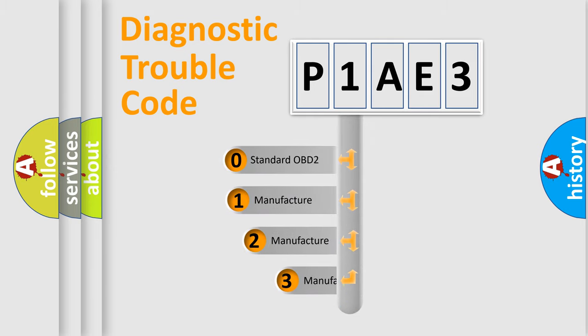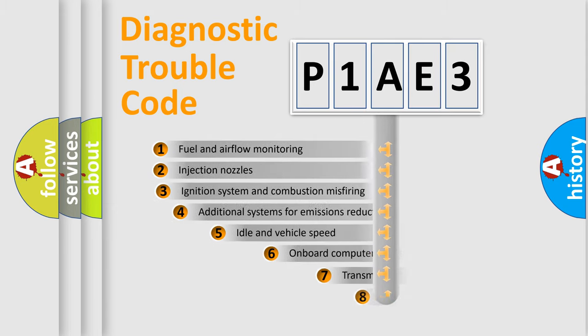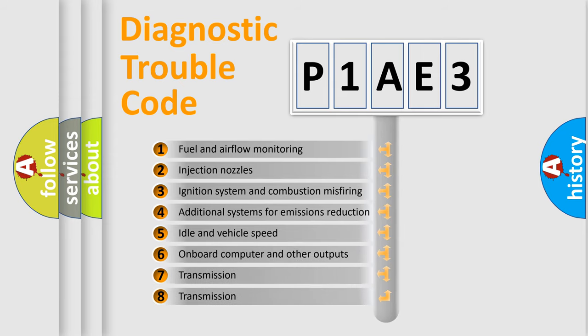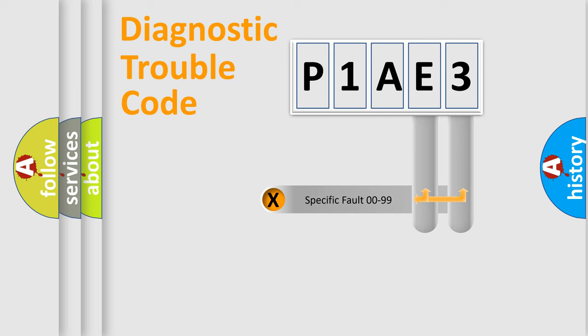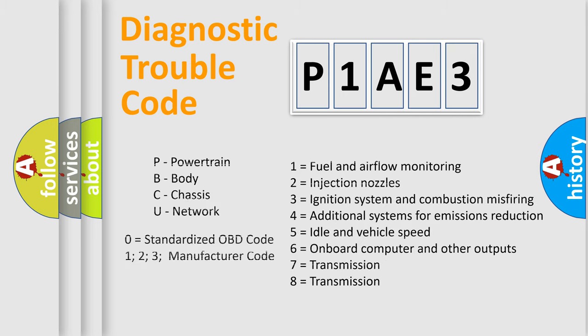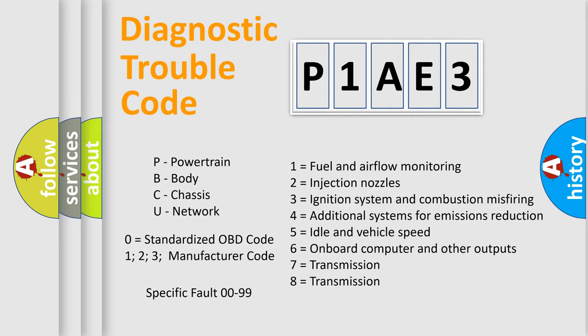If the second character is expressed as zero, it is a standardized error. In the case of numbers 1, 2, or 3, it is a more precise expression of the car-specific error. The third character specifies a subset of errors. The distribution shown is valid only for the standardized DTC code. Only the last two characters define the specific fault of the group. Let's not forget that such a division is valid only if the other character code is expressed by the number zero.